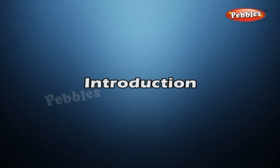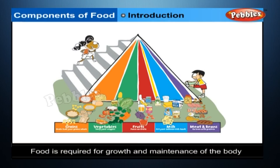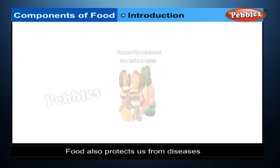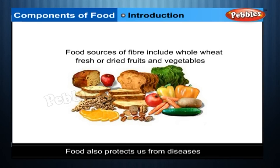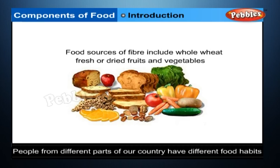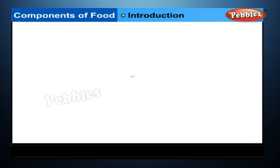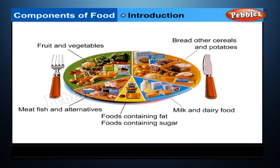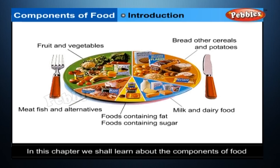Components of Food. Introduction: Food is required for growth and maintenance of the body and also to protect us from diseases. We eat a large variety of foods and people from different parts of our country have different food habits. Some people prefer rice, others take chapatis or meat and fish. In this chapter, we shall learn about the components of food.